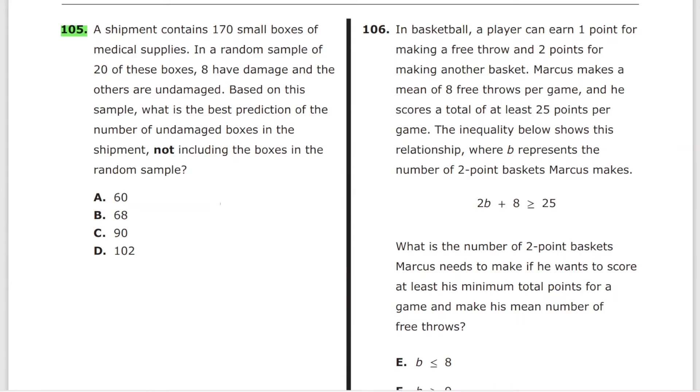Last problem from test A. A shipment contains 170 small boxes of medical supplies. In a random sample of 20 of these boxes, 8 are damaged and the others are undamaged. Based on this sample, what is the best prediction of the number of undamaged boxes in the shipment, not including the boxes in the random sample? What makes this problem really complicated is the wording. The problem itself is pretty easy. What is the probability that there is damage? 8 over 20. But we're looking for the undamaged items. So what's the probability of the boxes being undamaged is 12 over 20. What is our number of boxes that we have to apply this probability to? It's not 170. It's 170 minus the sample of 20, which is 150.